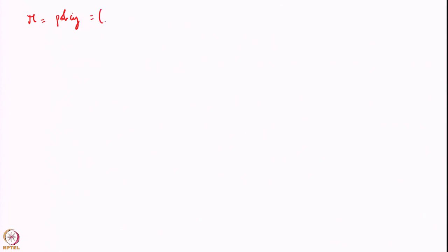So what we will do now is go back to the stochastic control type of formulation of the problem. We were looking for an optimal policy pi which comprised of functions mu_0 to mu_{n-1} - these were the decision rules - and we wanted a policy that is in the set of Markov deterministic policies.